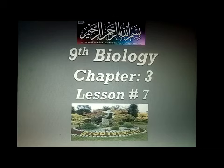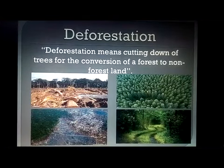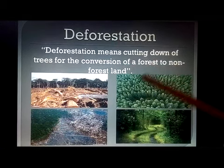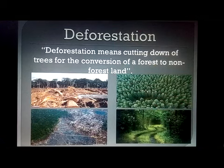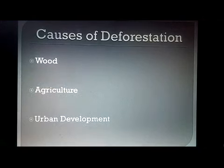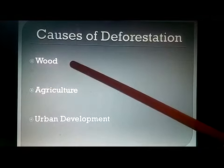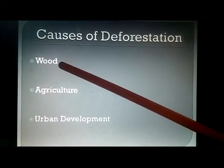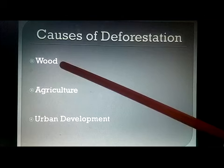Today's lesson is basically about deforestation. What does deforestation mean? 'De' comes from destruction — to destroy. So it means destroying forests, and how are they destroyed? By cutting down trees for the conversion of forest land to non-forest land. One reason is the need for wood; even in the modern age we use wood extensively, so forests must be cut down for that.